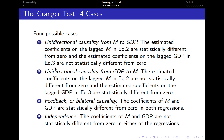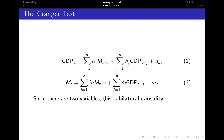If we have unidirectional causality from GDP to m, then the estimated coefficients on the lagged m in the first equation are not statistically different from zero, and the estimated coefficients on the lagged GDP in the second equation are statistically different from zero. So going back to the system, alphas are statistically insignificant whereas deltas are now statistically significant — meaning we have causality from GDP to m.